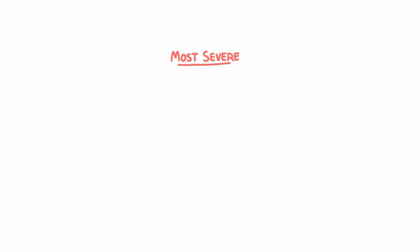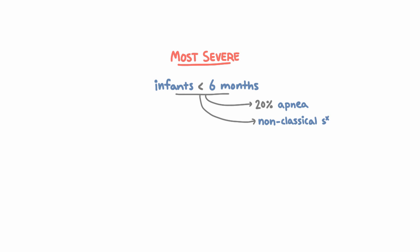Overall, the infection is typically most severe in infants younger than six months, and up to 20% of these might develop apnea, which is temporary cessation of breathing. That usually occurs early in the course of RSV. Kids in this age group also might not present with classical symptoms, so don't forget to think about RSV if young infants present with lethargy, poor feeding, fever, or even an ear infection during RSV season.